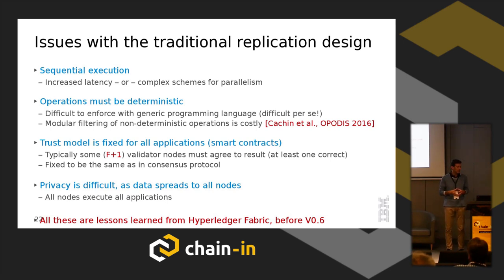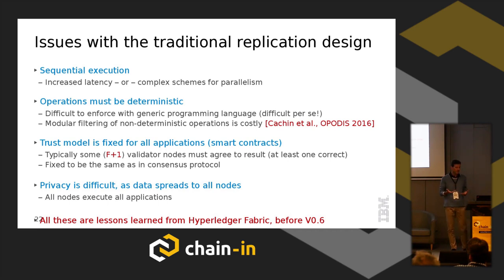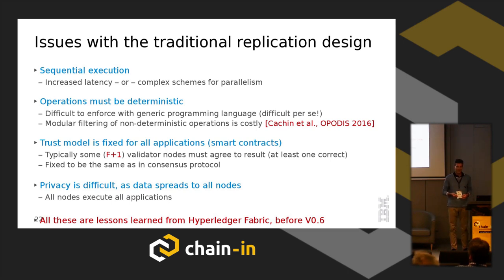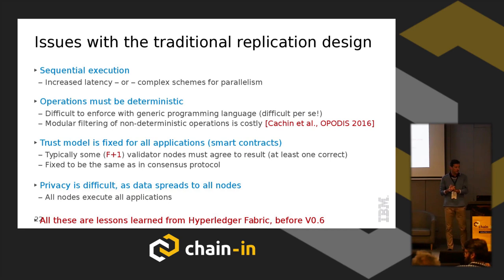Determinism in a general-purpose language is indeed an issue. We did not want to have a domain-specific language, but of course you can try to develop your own language for your blockchain application — the best case being Ethereum. Now there's a big market for formally verifying Ethereum contracts, because that language is apparently very difficult to understand. Especially if you say the code is the contract, and then you have a bug that other people say is a feature — this became prominent two years ago with the DAO incident.